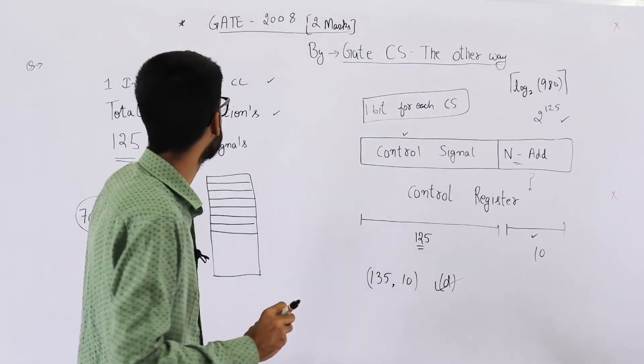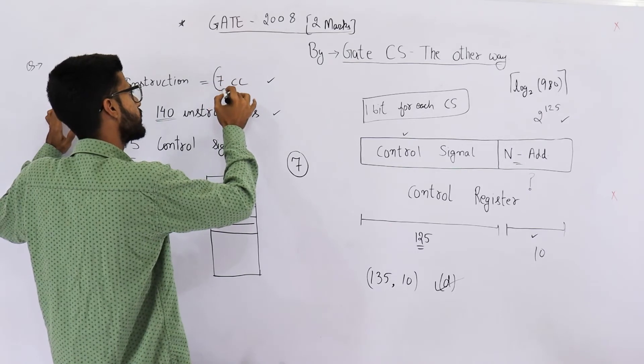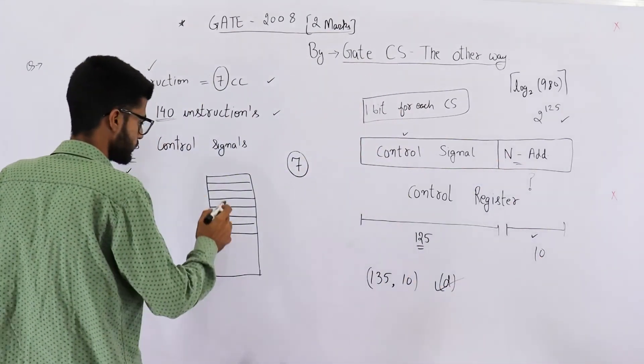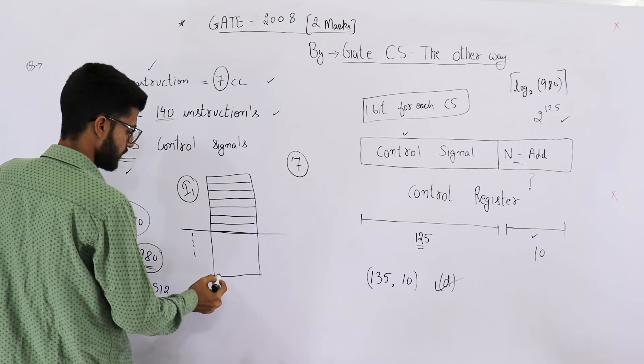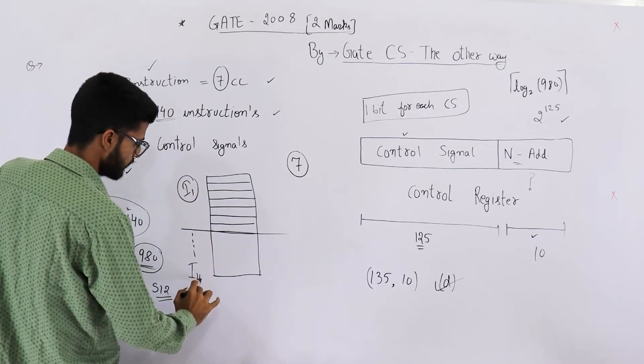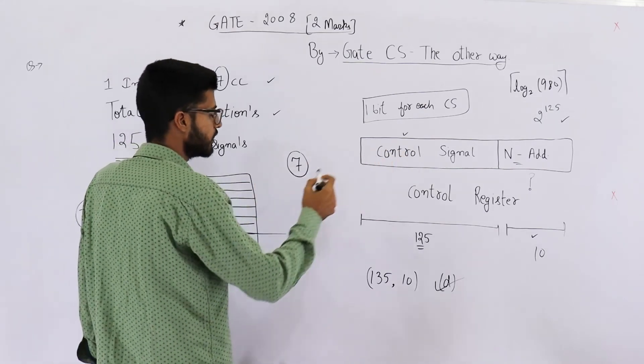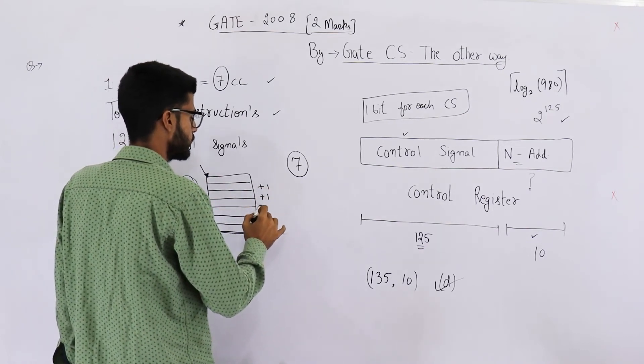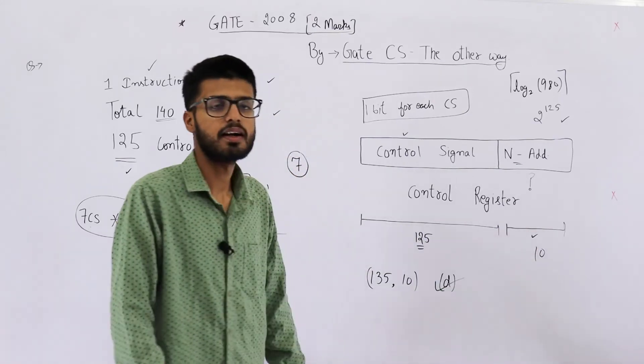One more thing, I have a question for you now. Because we are saving all seven control signals for each of the clock cycles required by one instruction, then why do we need a next address? Because each and every control signal is saved in order. Say this is your control memory and this is instruction I1 and so on. We are saving seven control signals for each of these 140 instructions, that means still I140. Now because we are saving every control signal, then why do we need a next address? Once we have located this base address, then we just need to add one to get the next micro instruction. Then why do we have this next address? You think about it and I'll see you in the next video.